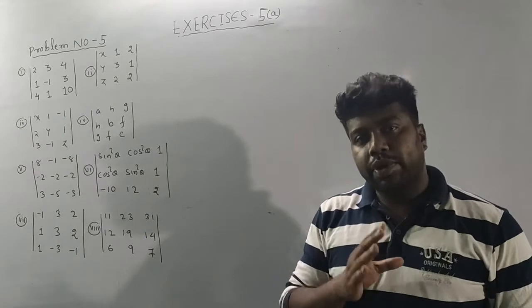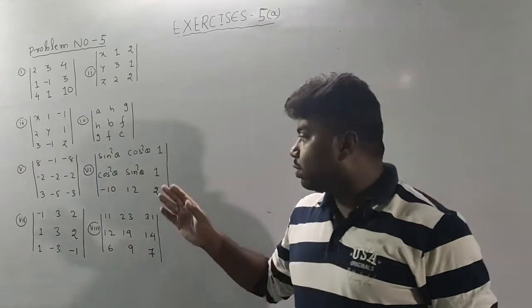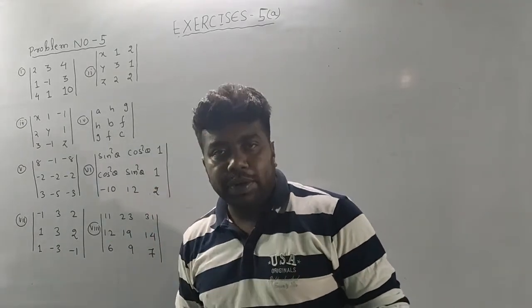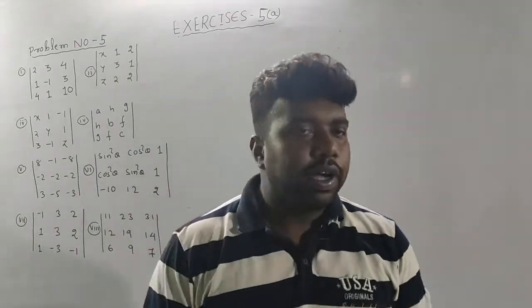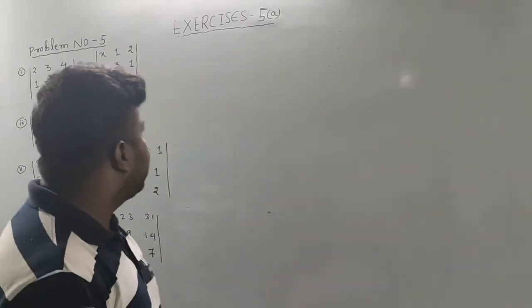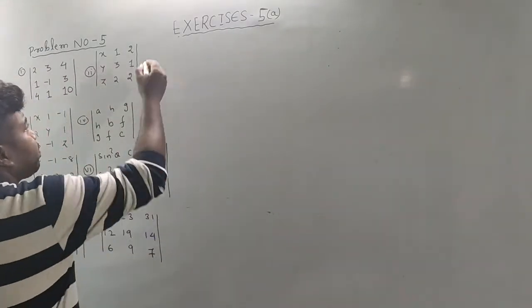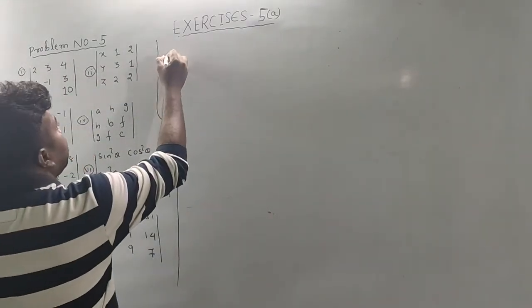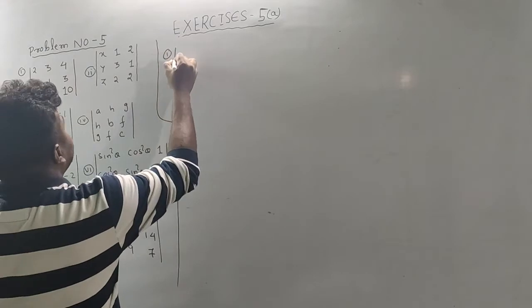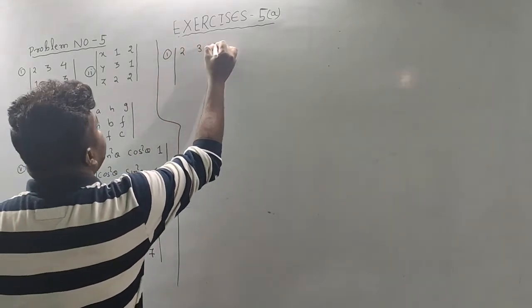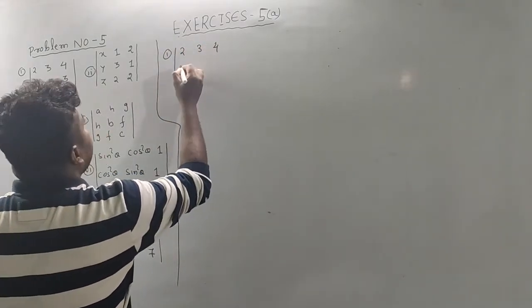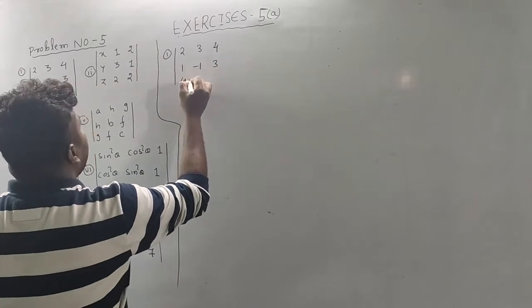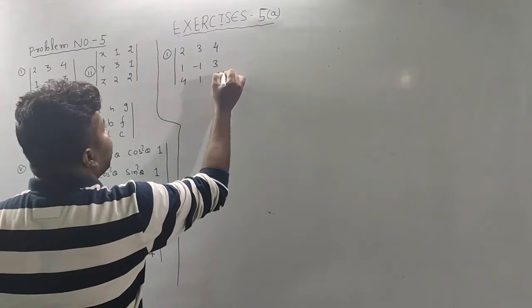How do you use a property? When you do the same thing, you do the same. So we start. The first question is: 2, 3, 4, 1, minus 1, 3, 4, 1, 10.